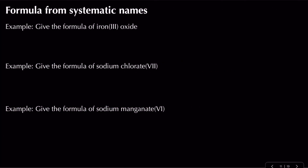Now, what about working in reverse — finding the formula from a systematic name? This is trickier. For iron(III) oxide: iron is three plus, oxide is two minus. Using drop and swap, the two comes over to iron and the three comes over to oxygen, giving Fe2O3.